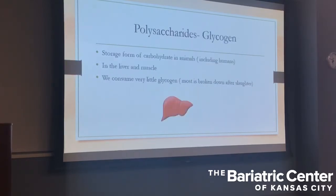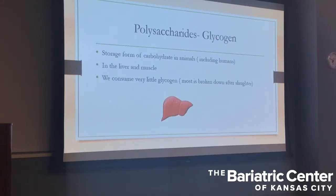Glycogen is technically a polysaccharide. Glycogen is the storage form of carbohydrate in animals, including us humans. It's found in the liver and in the muscle. We don't really consume glycogen — that's not something we eat — but we do carry glycogen in our bodies in our muscle and our liver. It's how we store carbohydrate in our body.